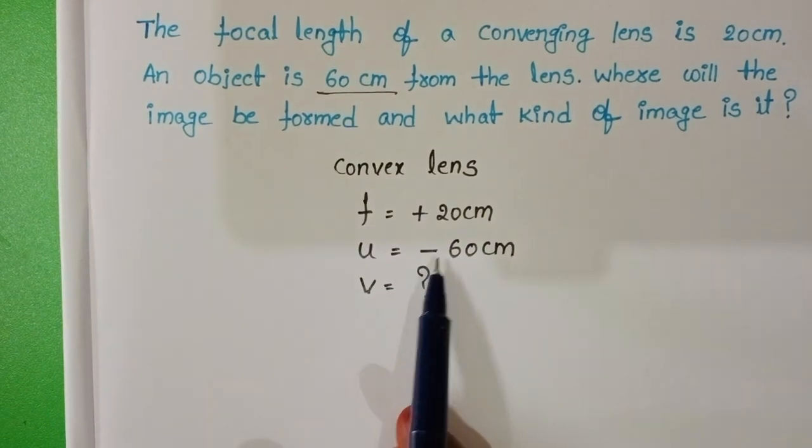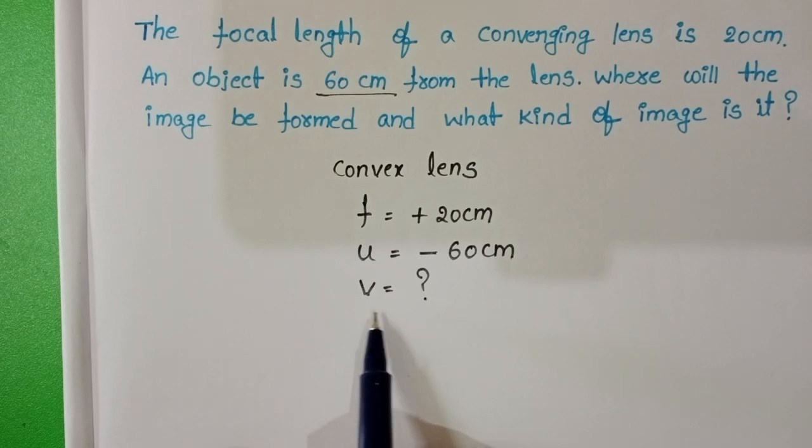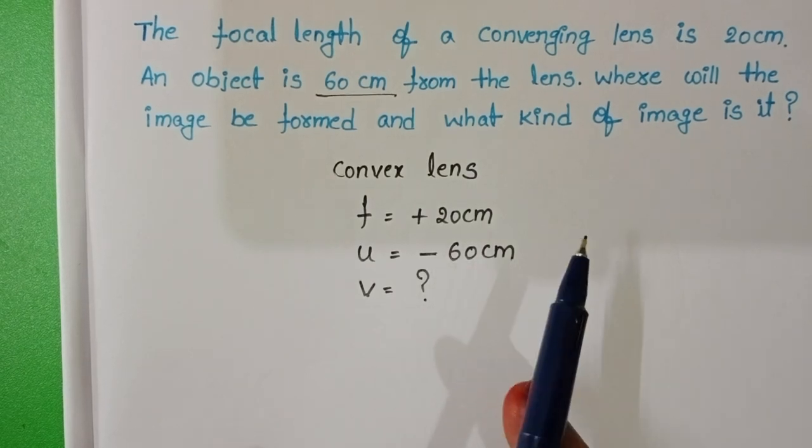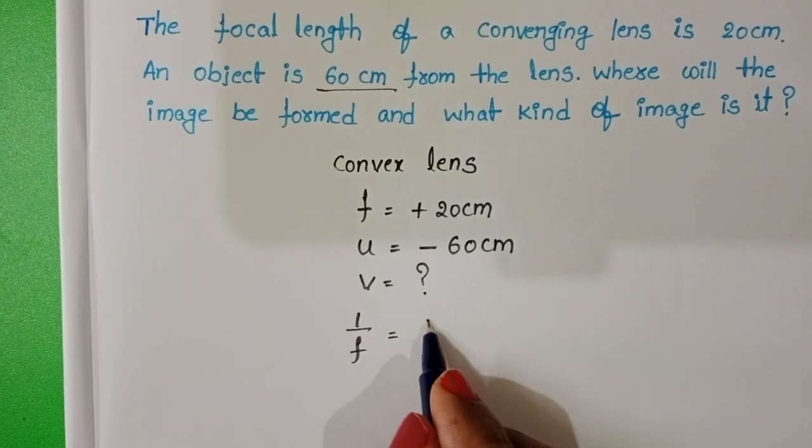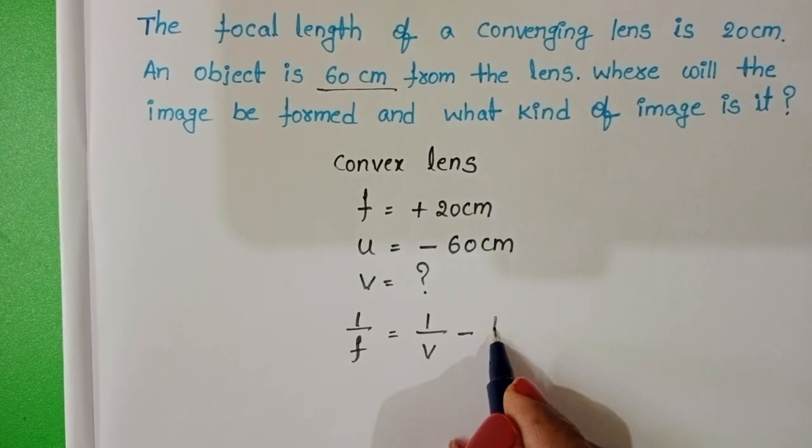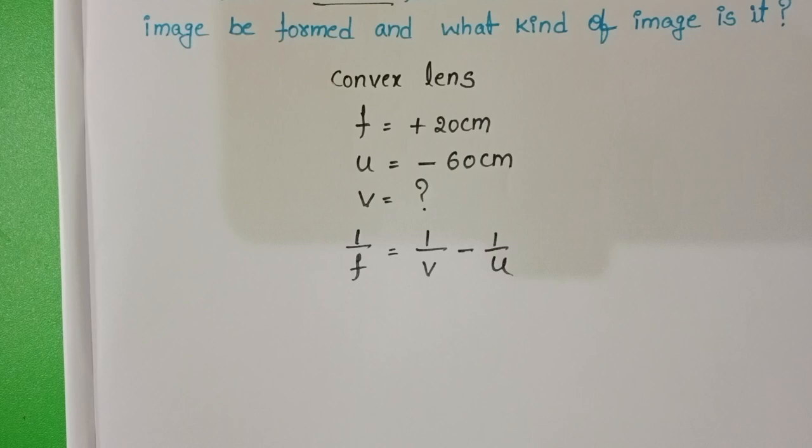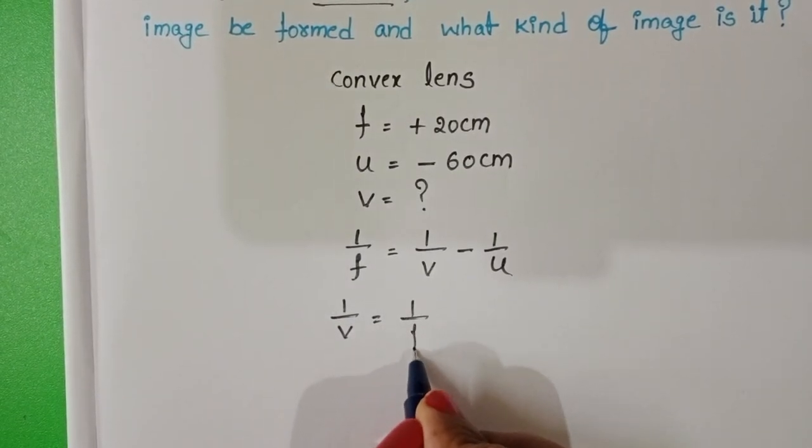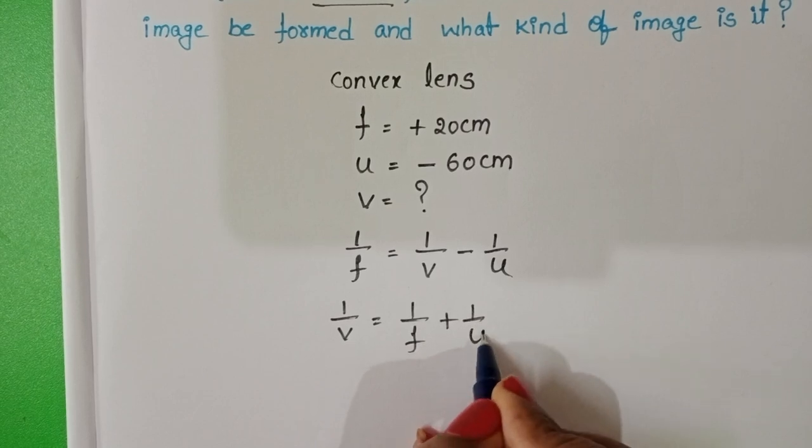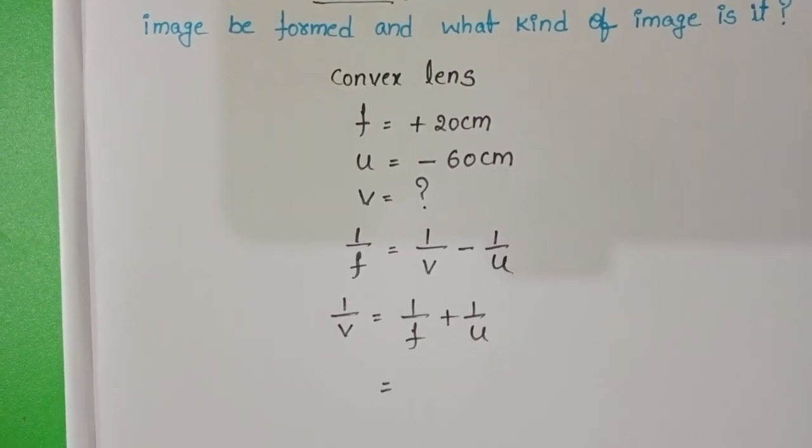We know object distance and focal length. We have to find the image distance, so take the lens formula: 1/F equals 1/V minus 1/U. From this formula, 1/V equals 1/F plus 1/U. Now substitute the values.